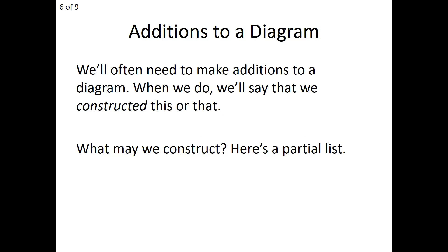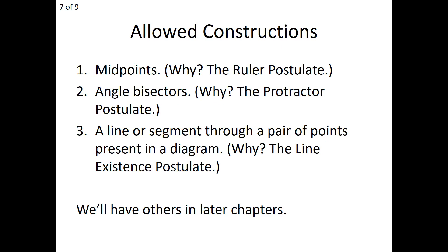Today we also begin something new in proof: we begin to make additions to our diagram. We are allowed to construct on that diagram. What could we add? If I am given any segment, I know a segment always has a midpoint. Because of the Ruler Postulate, I'm allowed to create a midpoint — so if you're given a segment, you can construct a midpoint on it, and you're allowed to do that.